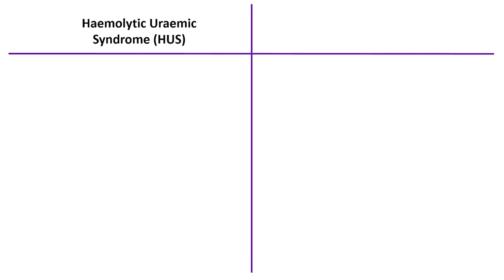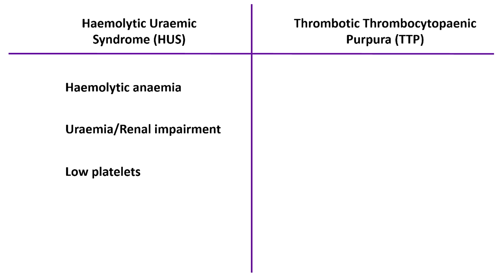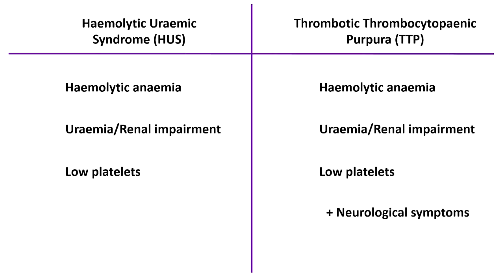HUS is hemolytic uremic syndrome. It's a syndrome of hemolytic anemia, uremia caused by renal failure and thrombocytopenia which means low platelets. TTP which is thrombotic thrombocytopenic purpura, you can think of that as a worse version of HUS. You get all the things that you get with HUS except you can also get problems with the brain causing confusion or even coma.